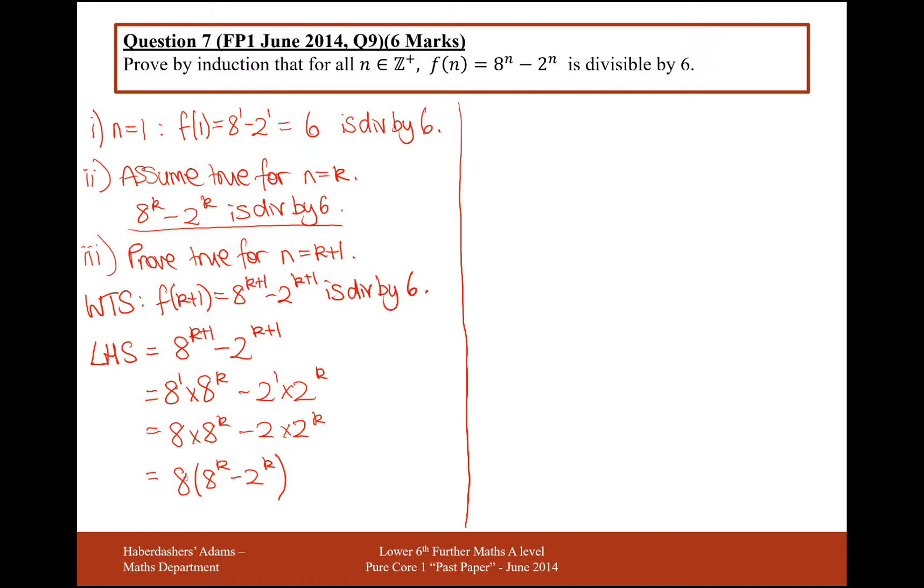But here, you see if when we expand it, we're going to get 8 times 2 to the k. So, what I need to therefore do, if I only want to take away 2 lots of 8 to the k, I need to therefore add back on 6 lots of 2 to the k.